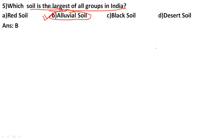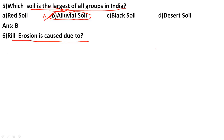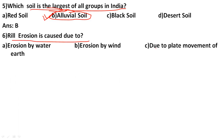Rill erosion is caused due to: erosion by water, erosion by wind, plate movement of the earth. The correct answer is A, erosion by water. When water carries and removes material, that is called rill erosion.